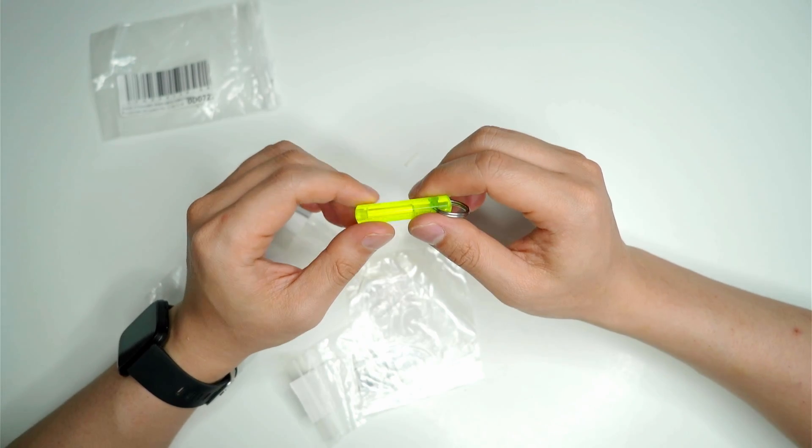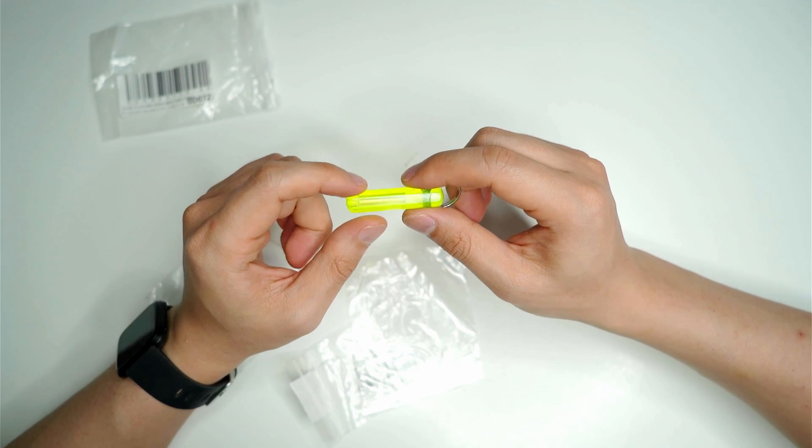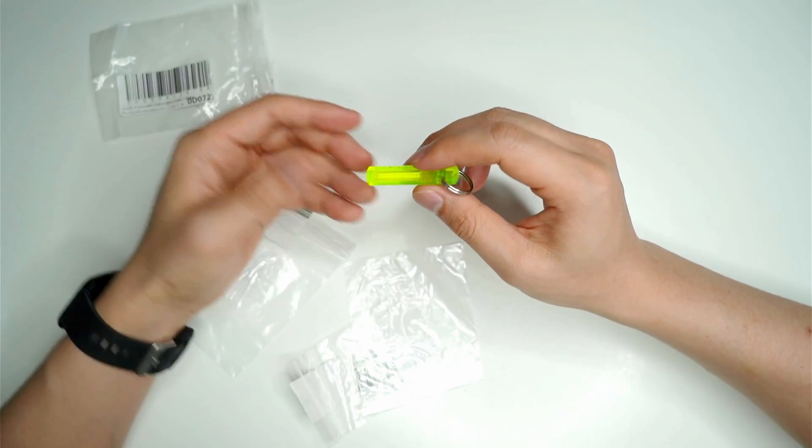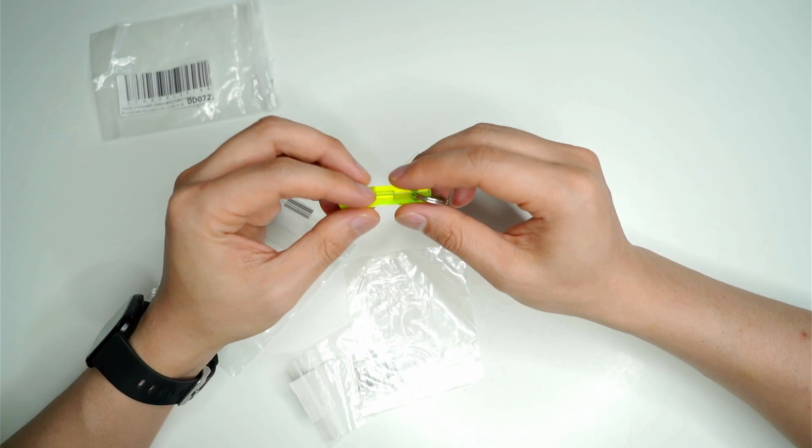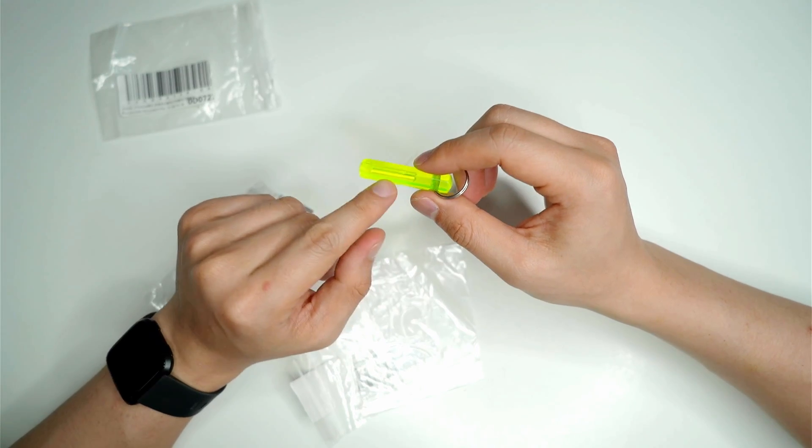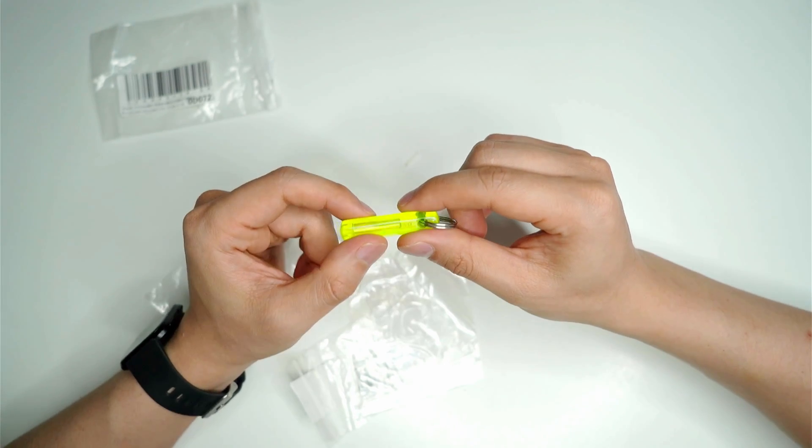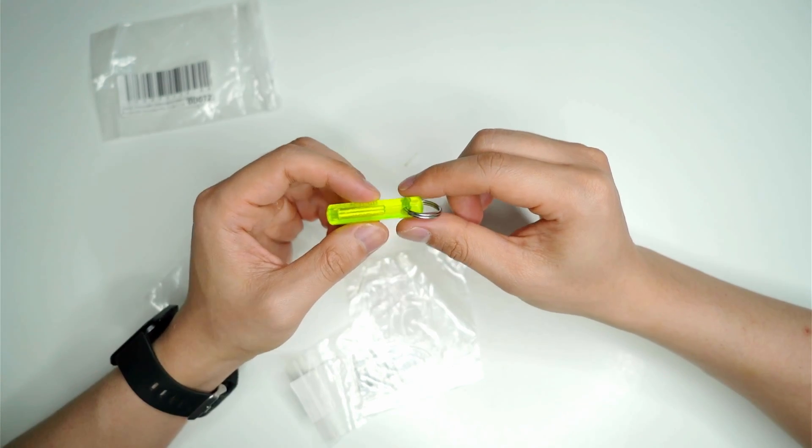A proper tritium vial will actually glow for about 20 to 30 years without any charging with a flashlight or anything like that. It emits beta particles which interact with the layer of phosphor on the inside of the vial, so that actually produces visible light.